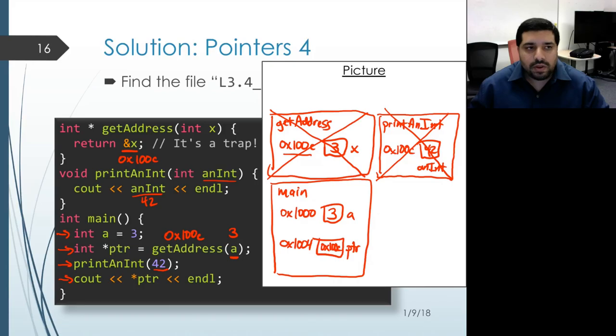And so what we have there is another Cout. And what that's going to do is it's going to dereference PTR in order to obtain the value located at that memory address. Now PTR, it holds the address 1000C. And it just so happens that at this moment, there isn't a valid object located at that address.